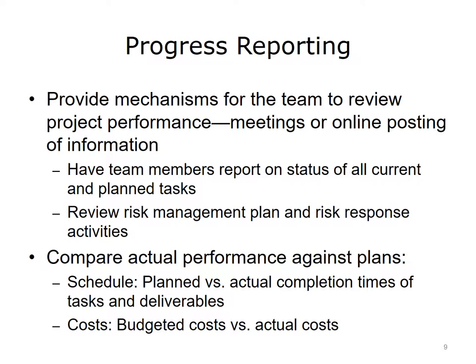In terms of progress reporting, you can monitor progress simply by meeting with your team to discuss performance and their experiences on the project. At these meetings, ask team members to report on the status of all current and upcoming tasks. Review the risk management plan with them and discuss your risk response activities. Compare actual performance against planned performance and schedule — what are the planned deadlines versus actual completion times of tasks and deliverables? Regarding costs, what are the budgeted costs versus actual costs? Comparing these elements helps you assess progress. Face-to-face meetings may not always be feasible or practical. Perhaps team members can routinely post performance information to an IT device such as a server or network, or you may consider conducting meetings online.